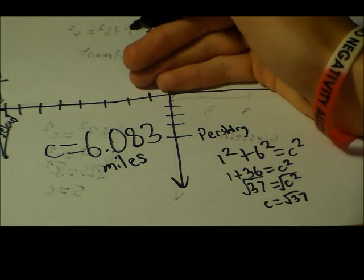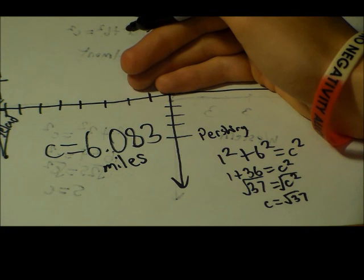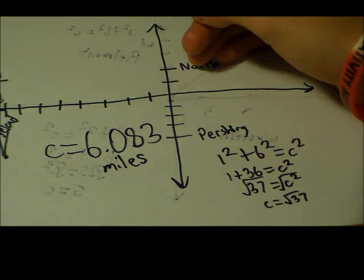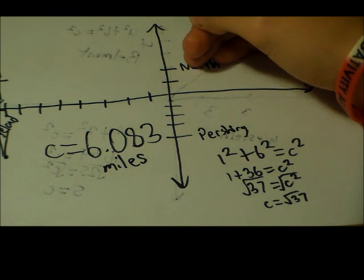And so, these were two problems showing how the Pythagorean Theorem can be applied to maps. In this case, we used the Brennan system, Chicago's grid system. So, I hope you guys enjoyed the video.